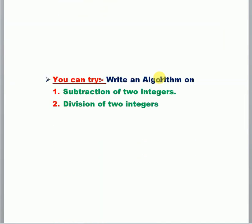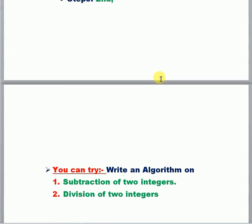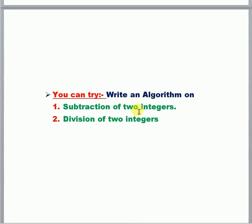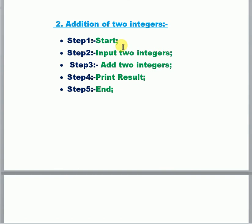For division of two integers, it is the same: Start, Input two integers, here we Divide two integers — suppose taking two integers 10 and 2, 10 divided by 2 gives 5 — then Print result.